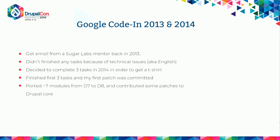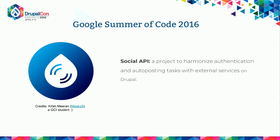I was 17 years old when I did that. I started with GCI and then I contributed patches to Drupal core. And then in 2016 I did GSoC — Google Summer of Code — and I worked on a project called the Social API. That is the title of the presentation. It's a project to harmonize authentication and auto-posting tasks with external providers such as Facebook, Google, Twitter, LinkedIn, and PayPal. I like to think that Social API exists only because I wanted a t-shirt four years ago.